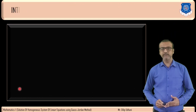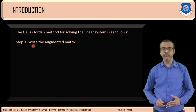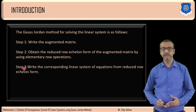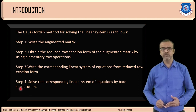Reducing the augmented matrix to reduced row echelon form is called the Gauss-Jordan method. The steps are: Step 1 — write the augmented matrix; Step 2 — obtain the reduced row echelon form using elementary row operations; Step 3 — write the corresponding linear system of equations from the reduced row echelon form; Step 4 — solve by back substitution. Using these four steps we can find the solution of a homogeneous system using Gauss-Jordan method.